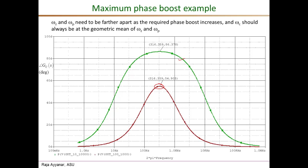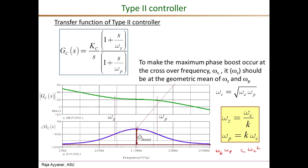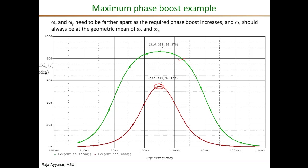This gives us a way of determining K, which is essentially a measure of the separation between omega_z and omega_p for the same geometric mean at which omega_c is chosen. If you want a larger phase boost, you need a larger value of K and greater separation between the zero and pole.